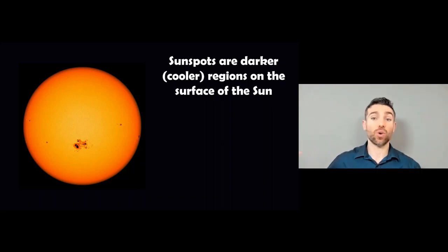We say that they are cooler, and they are, but they're not cold, they're just cooler than the surrounding area, which is why they look dark. So you'll see these sunspots, these darker regions on the surface of the sun.